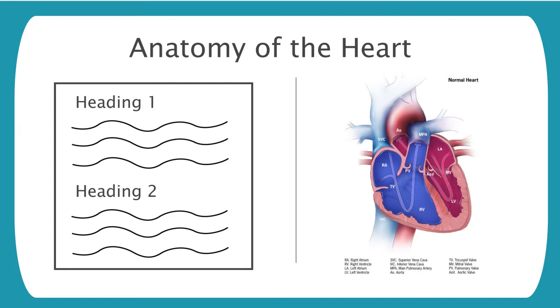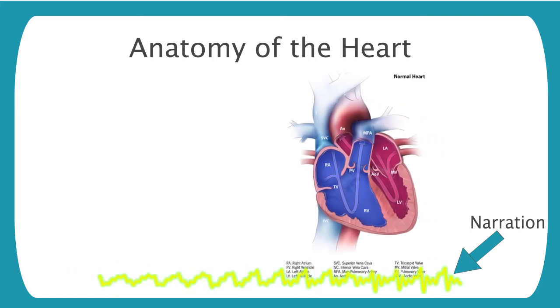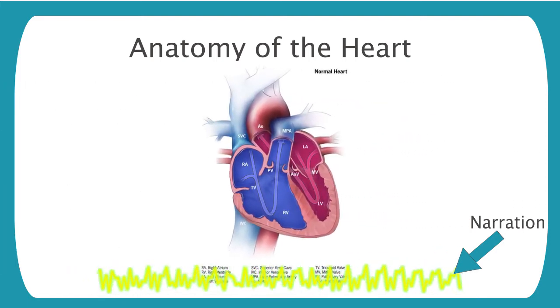Number three is the redundancy principle, which says that people learn better from graphics and narration than from graphics, narration, and on-screen text. This is a little bit counterintuitive because most of us would assume that more is more and giving the learner multiple modes of information will benefit them. But really this superfluous text conflicts with the information being received on the auditory channel and the visual channel, both of which are being used with graphics and narration.